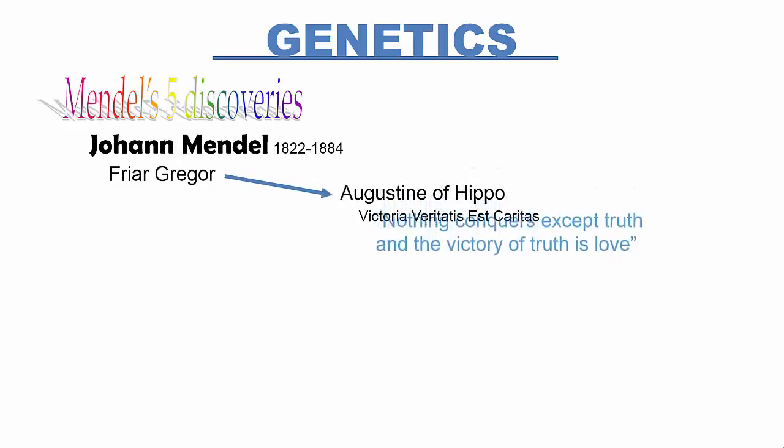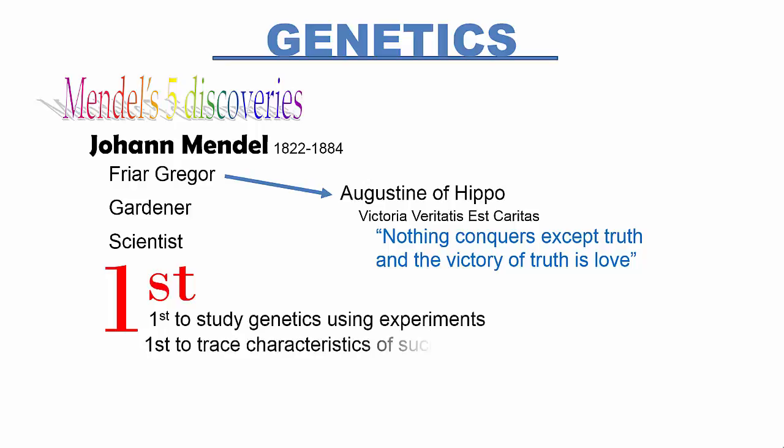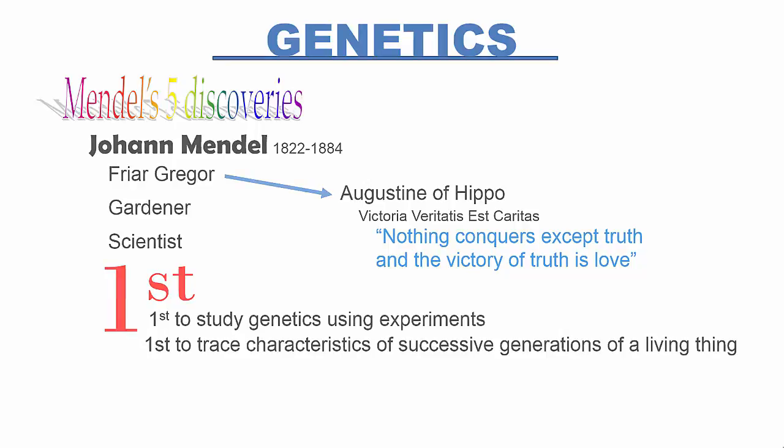Mendel was interested in science. He studied physics in college at the University of Vienna under Christian Doppler of the Doppler effect fame, but is best known for his work in genetics. He is the first person to experimentally study genetics.